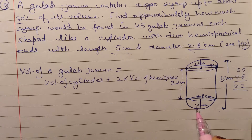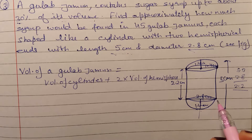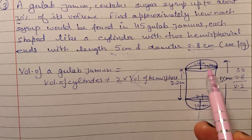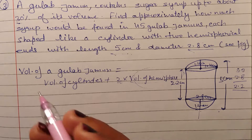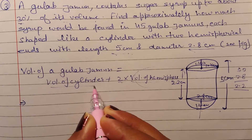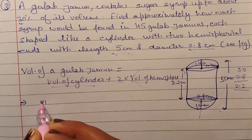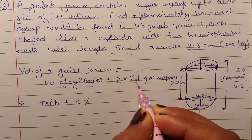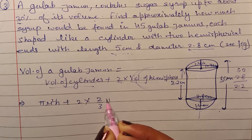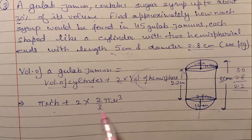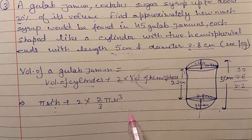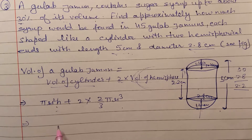मैंने 2 के साथ multiply इसलिए किया क्योंकि दोनों ends पे hemisphere है और with the same volume, because दोनों का radius same है। तो volume भी same होगा। एक volume of hemisphere लेकर उसे 2 के साथ multiply कर दिया, because there are 2 hemispheres। Volume of cylinder = πr²h, plus 2 × (2/3)πr³। Radius दोनों का same है इसलिए r ही लिखा।